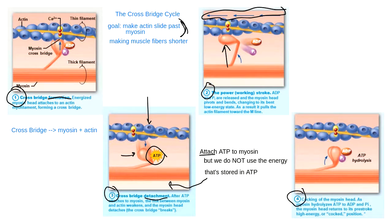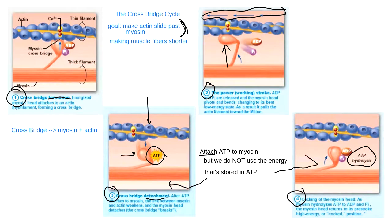Step four is called cocking of the myosin head, or sometimes reactivation of the myosin head. The goal of this last stage is to use the energy of ATP to take my myosin molecule that was bent over and restore it to the standing upright shape — the cocked position — so it's ready to attach to actin again.